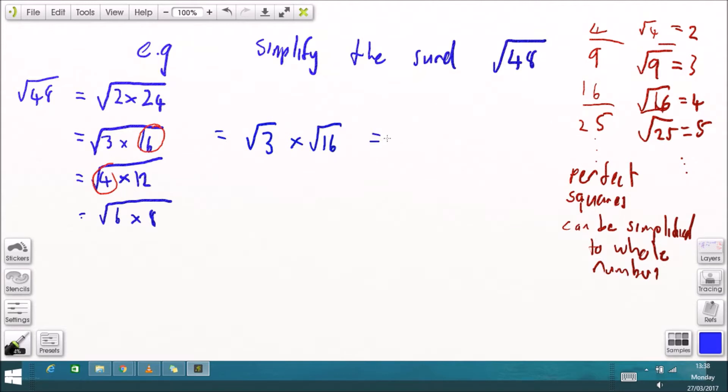The square root of 3 times the square root of 16 is square root of 3 times root 16 is 4, so the simplified version of root 48 is 4 times root 3.